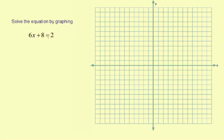So we need to get this equation equal to 0. It means you have to subtract 2 from both sides. We're going to get 6x plus 6 equals 0. And then substitute for y. 6x plus 6 equals y.